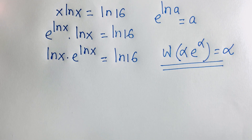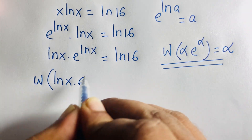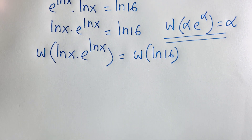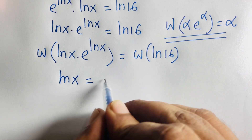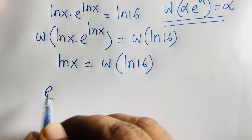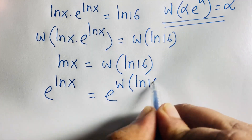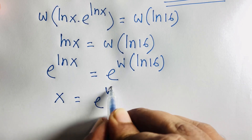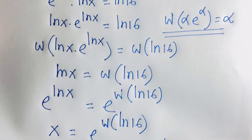Applying the Lambert W function to both sides of ln(x) · e^(ln(x)) = ln(16), we get ln(x) = W(ln(16)). Then applying e to both sides, and using e^(ln(x)) = x, we arrive at the final answer: x = e^(W(ln(16))).